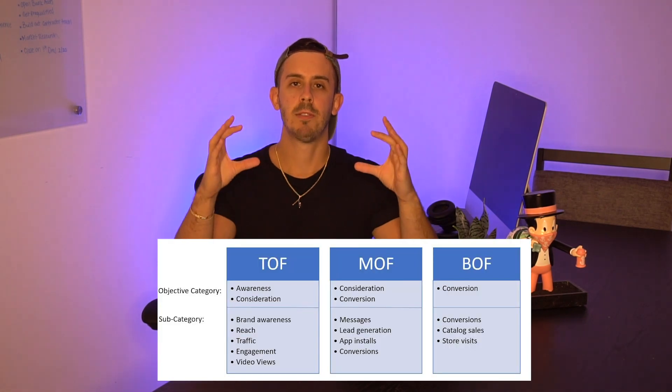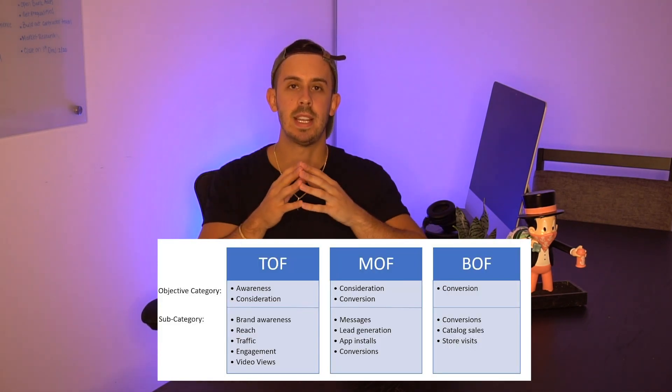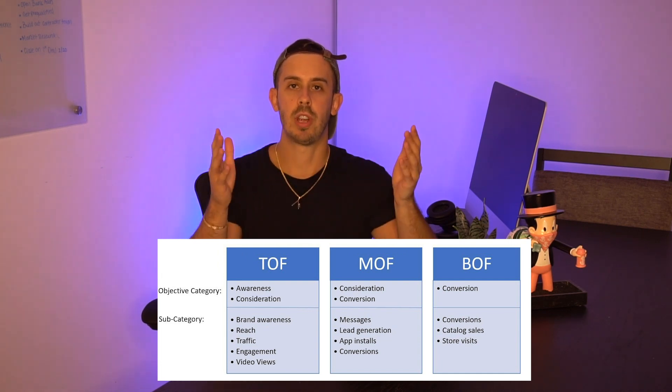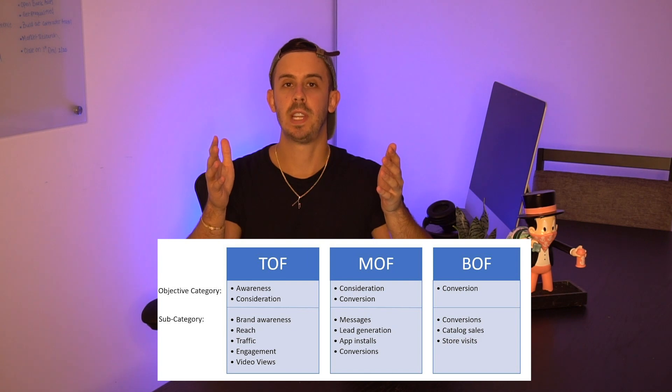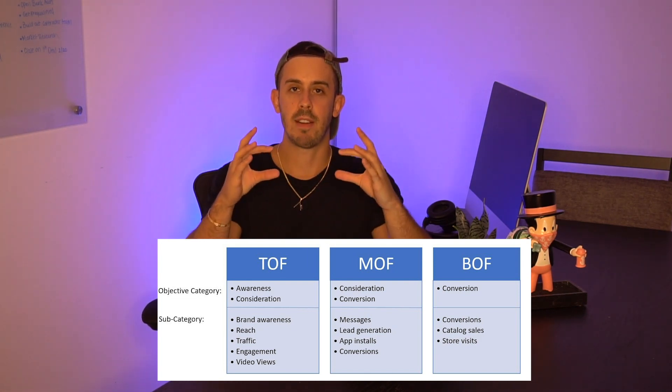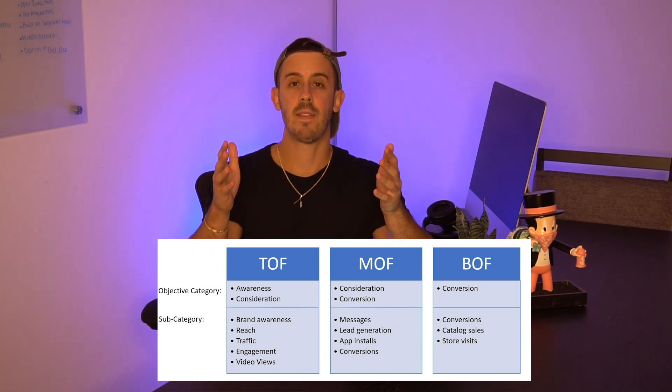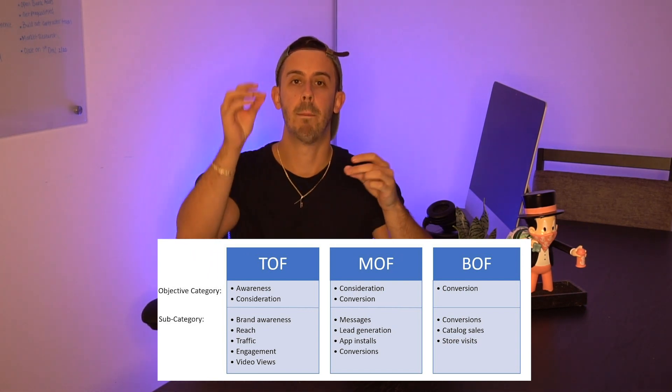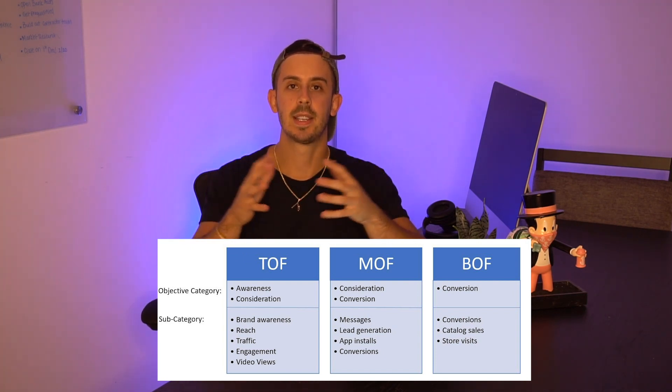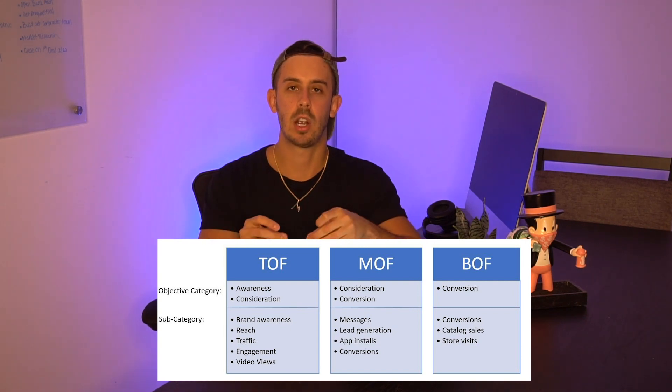Here's a basic funnel model you can use on your e-commerce store. At the top of the funnel we optimized for video views — running video ads targeting cold traffic using interest-based targeting, people who had never heard of our brand. At the same time, we also ran ads optimizing for traffic and clicks a little further down the funnel, where the audience was simply people who had watched the video above in the funnel. Finally, we created ad sets optimizing for conversions, retargeting people that had visited our website.